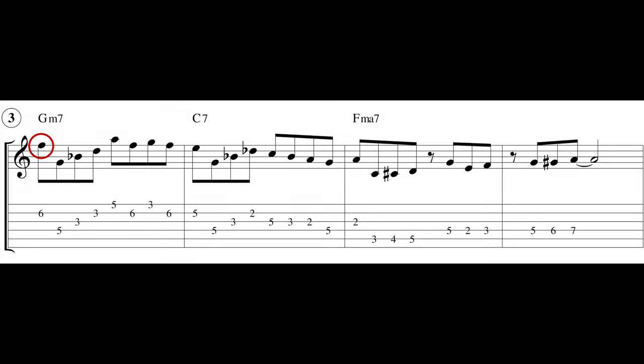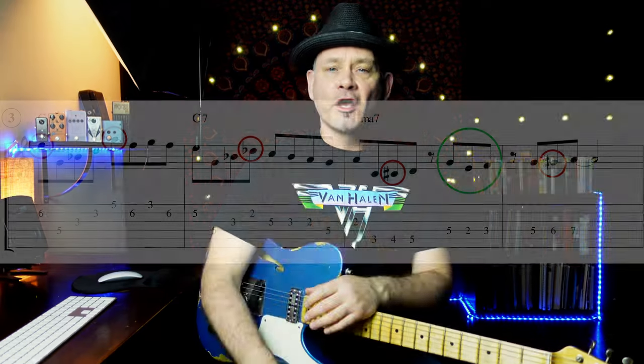I displaced the first note an octave and targeted the ninth, which is an A, on the G minor seven instead of the G, the root. It gives it more lift. I also added a flat nine on the C seven. Then we spruced up the F chord by adding some chromatic passing tones, an enclosure, and a bluesy note. You can always get some blues in your lines.